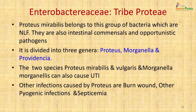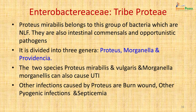Proteus mirabilis belongs to the Enterobacteriaceae tribe Proteae. This group consists of non-lactose-fermenting intestinal commensals and opportunistic pathogens, divided into three genera: Proteus, Morganella and Providencia. In Proteus, the two species are Proteus mirabilis and Proteus vulgaris. Urinary tract infections can also be caused by Morganella morganii and some species of Providencia. Other infections caused by the Proteus group include burn wound infections and septicemia.